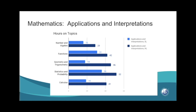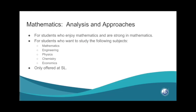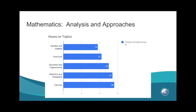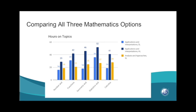The second option for DP Math is Analysis and Approaches — at LVA, we refer to this course as simply Analysis. This course is really for students who enjoy math and who are very strong in math, and it's also for students who want to study math, engineering, physics, chemistry, or economics. It is, however, only offered at the standard level. Here is a graph comparing all three of the math options. One important thing to note is that all subjects will have calculus — it just differs on how much calculus content the course will have.